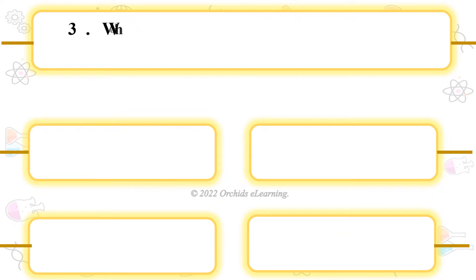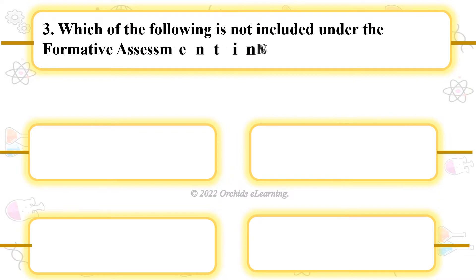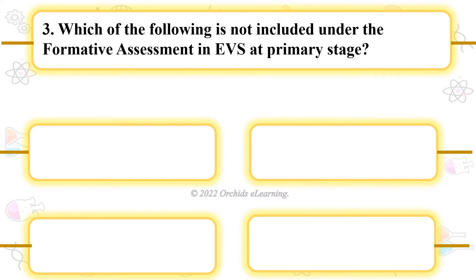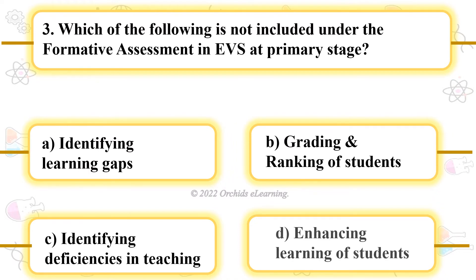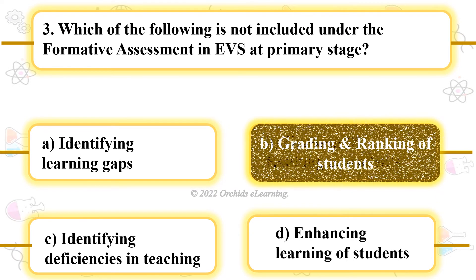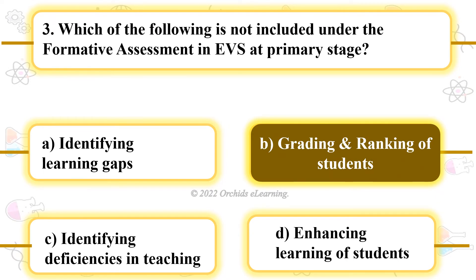Which of the following is not included under the formative assessment in EVS at primary stage? B. Grading and ranking of students.